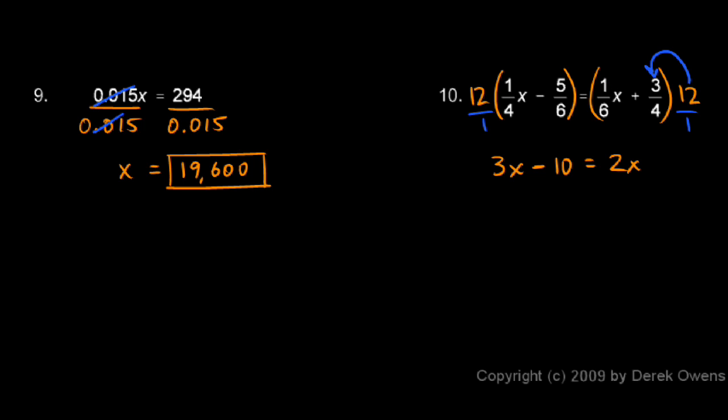I got that by multiplying the 12 by the first term. Now I need to multiply the 12 by the 3/4. So this 12 over the 4 reduces to a 3. And then I still have this 3 multiplied. 3 times 3 is 9. So it's plus 9.